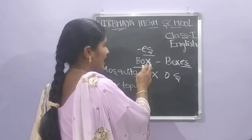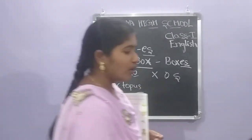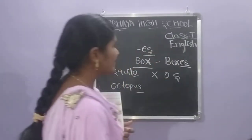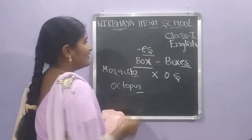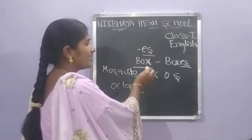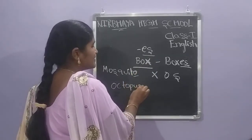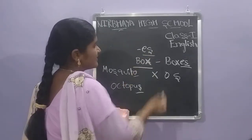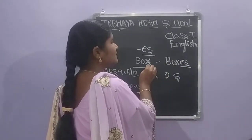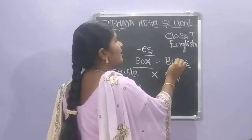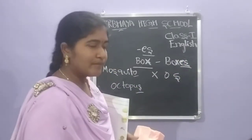The words end with X, O, or S — we add ES. Have you understood children? Box is a singular — B-O-X. Boxes — B-O-X-E-S — this is the plural form.